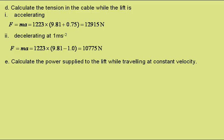Part E: Calculate the power supplied to the lift while travelling at constant velocity. Power is given by force multiplied by velocity, and at constant velocity the force was 12,000 newtons, and the velocity 1.5 metres per second, giving a power of 18,000 watts.